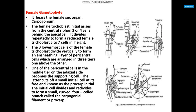The female gametophyte bears the female sex organ carpogonium. The female trichoblast initially arises from the central siphon, three to four cells behind the apical cell, and divides repeatedly to form a reduced female trichoblast five to seven cells in height. The three lowermost cells of the female trichoblast divide vertically to form a sitting layer of pericentral cells arranged in three tiers, one above the other.